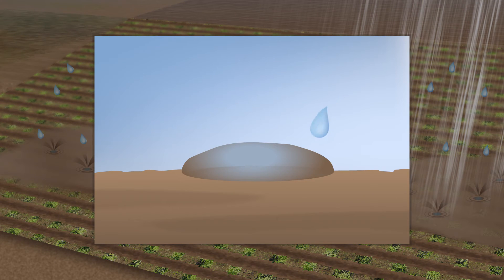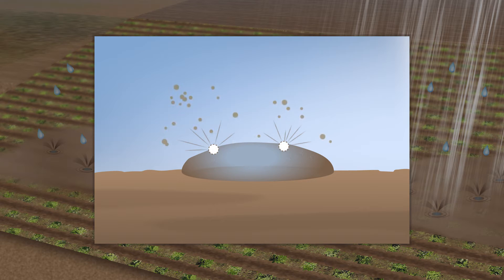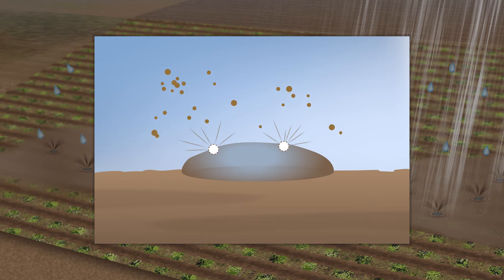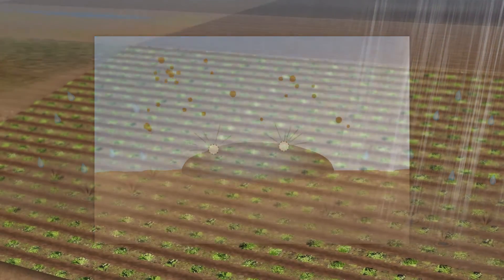As more rain falls, the splashing creates air bubbles, shown here in white, which mix with the dissolved matter in the soil. Then the bubbles float upward and quickly burst, releasing into the air a mist of soil organic compounds, which are shown here as small, brown particles.